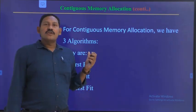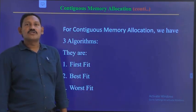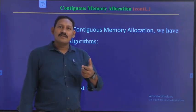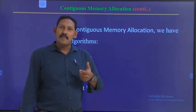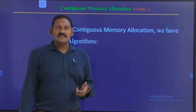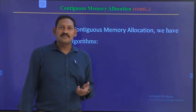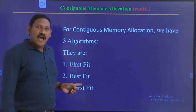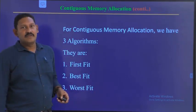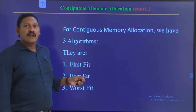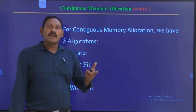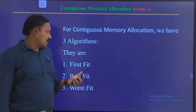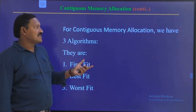The next topic is contiguous memory allocation. In order to allocate the available space or available memory, we follow three strategies, or we simply call them three algorithms. They are nothing but first fit, best fit, and worst fit. There are three algorithms for accommodating the available memory in the main memory. We will discuss these three algorithms with an example.